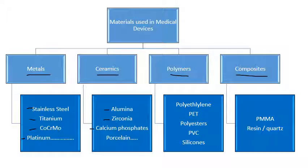The ceramics we come across — which may be less familiar than the others — are alumina, zirconia, calcium phosphates, and porcelain, which we've all likely encountered through dental implants. Polymers include polyethylene, PET found in plastic bottles and bags, polyesters found in clothes, PVC also used in clothes, and silicones which might be your phone cases or silicone bakeware — we come across these on a daily basis.